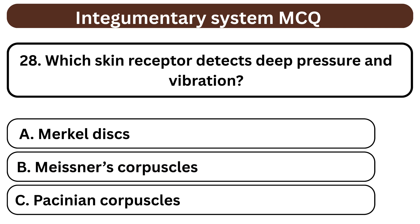Question 28. Which skin receptor detects deep pressure and vibration? A. Merkel discs. B. Meissner's corpuscles. C. Pacinian corpuscles. The answer is C. Pacinian corpuscles.